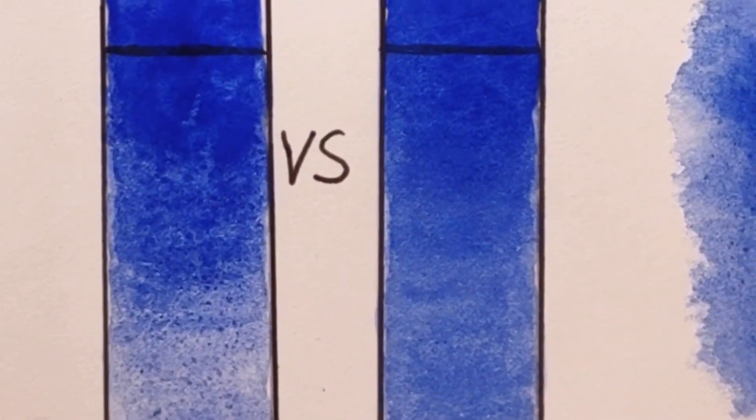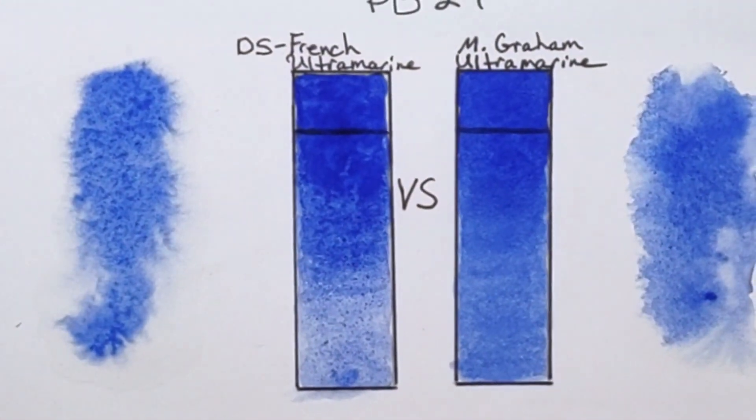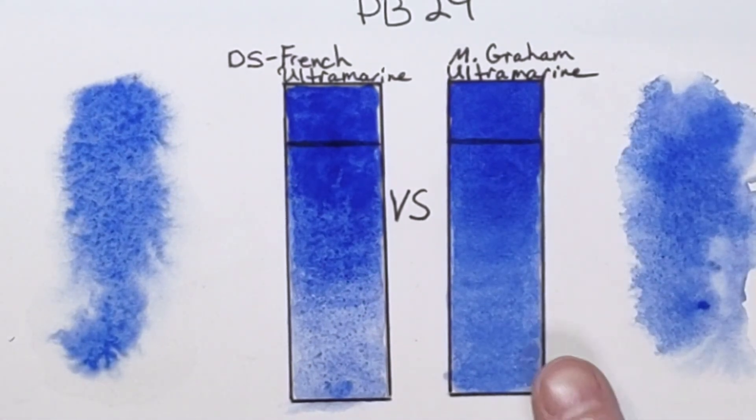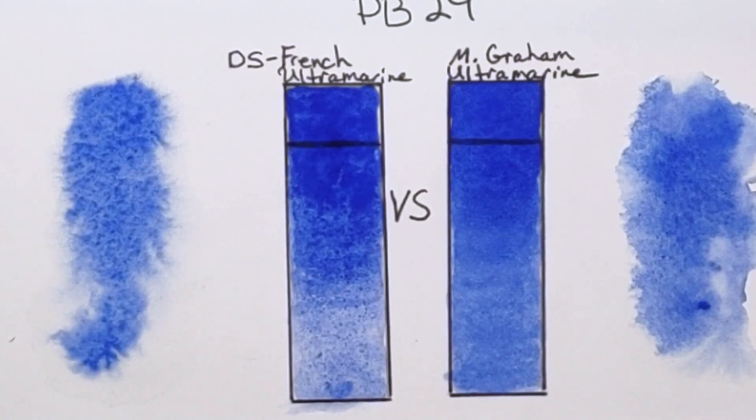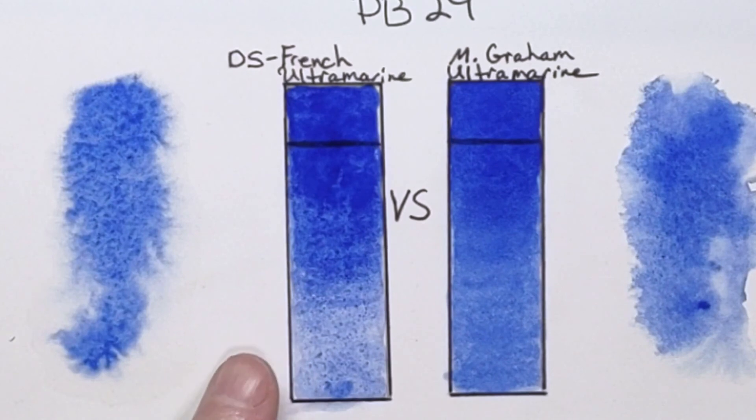I just feel like it's probably the honey base in the M. Graham that just makes it such a smooth wash here. Yeah, I love it. I really like them both. Not a big difference, but if you're someone who is steering away from a lot of granulation, then the M. Graham is probably your best choice.